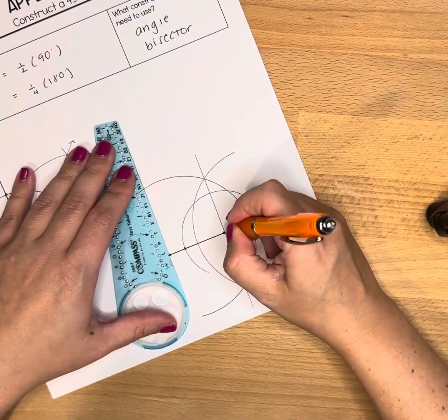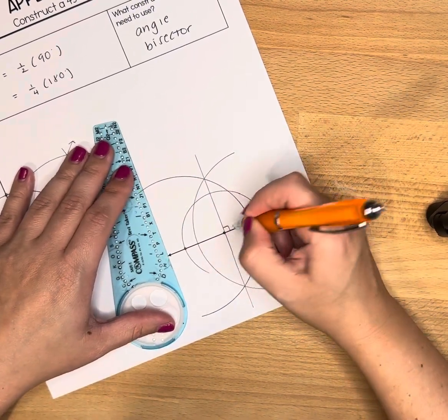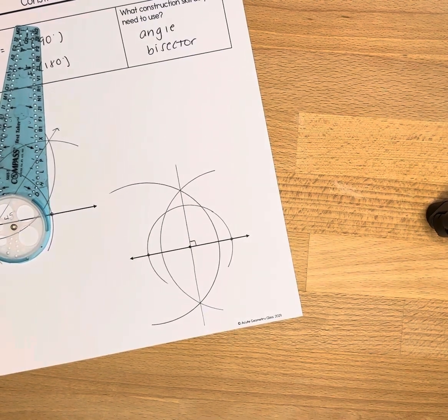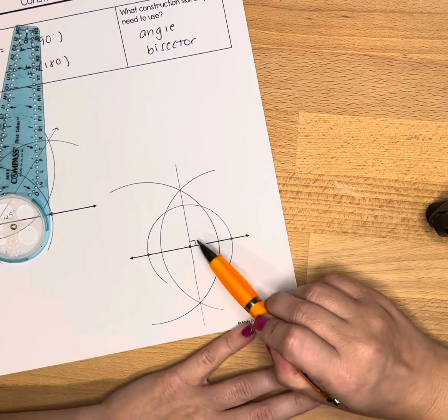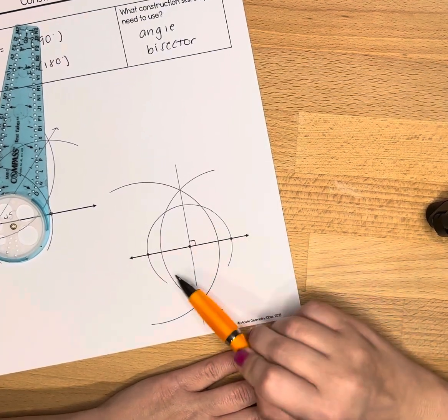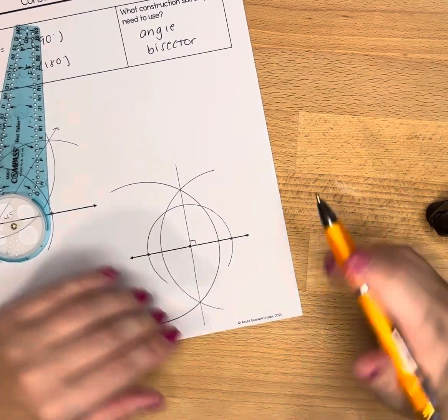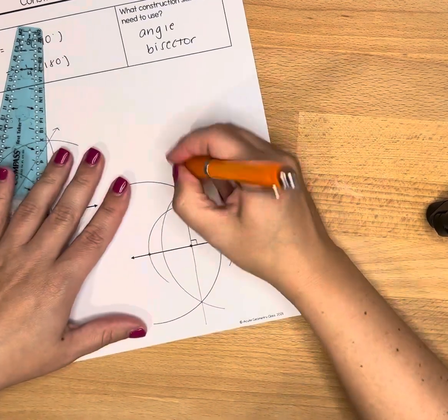Now what I have done is I have created a 90-degree angle, but remember our goal is to create a 45-degree angle. So we are going to now go in—you could pick any of these angles—but we're going to bisect them. I'm going to pick this top right one here.